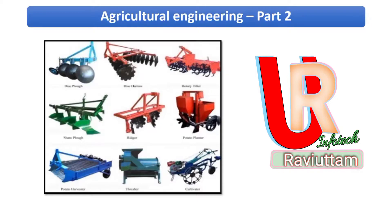At the end of part one, we were looking at interculture operations. For weeding and interculture operations, we saw that certain equipment is used — hand hoes, long handle weeders, and cultivators. We had seen these in detail, and cultivators are what we need to discuss further in this part.